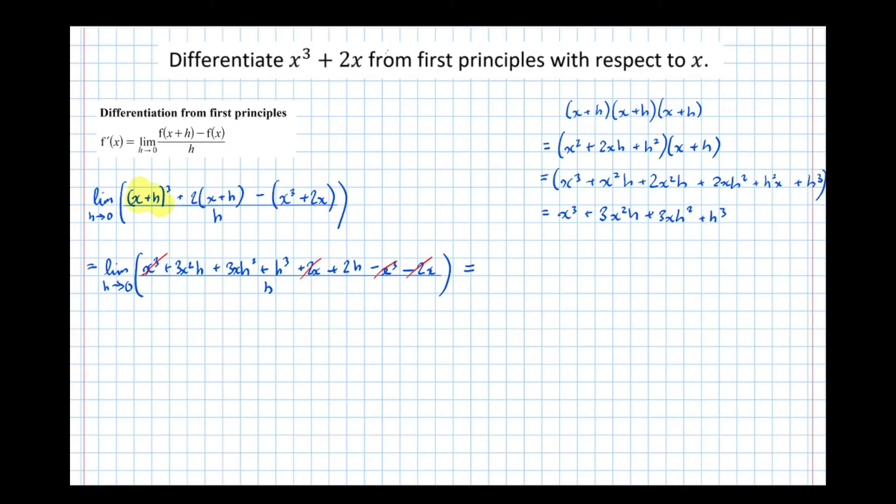So that's equal to 3x squared plus 3x h plus h squared plus 2. And what I've done here, I've made the classic mistake of not putting in the limit signs, so I move that along a bit, and I must make sure to get the marks of writing the limit as h approaches 0 of that expression.